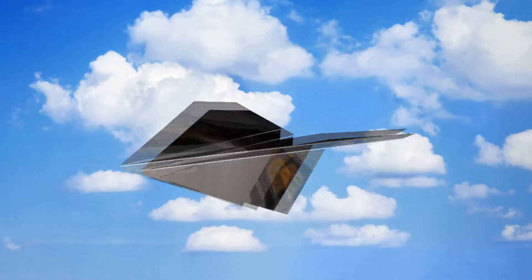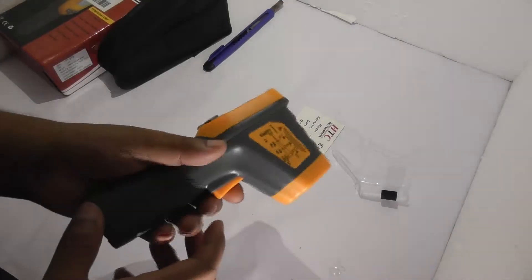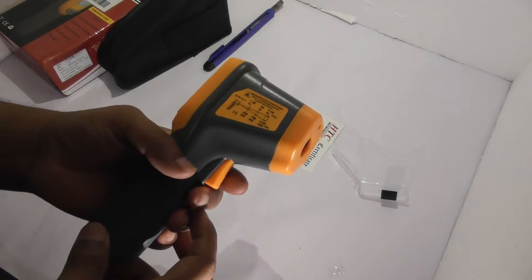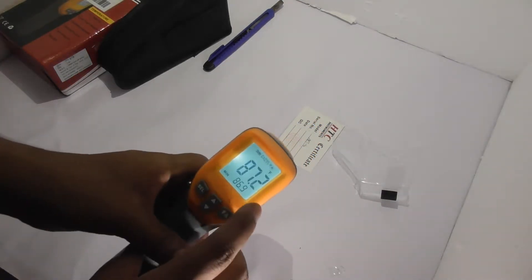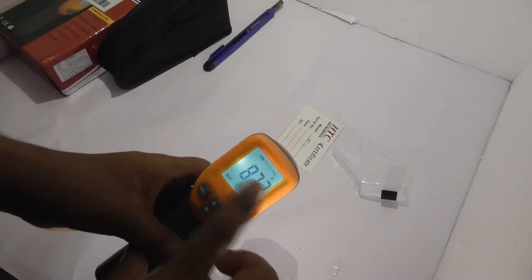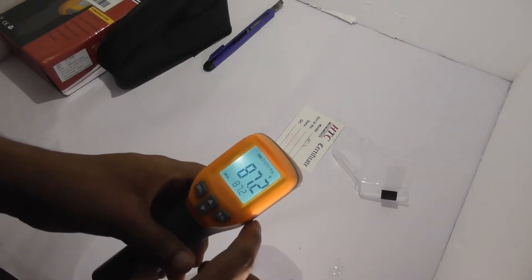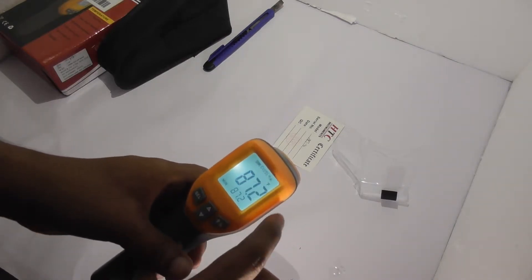Now let's turn on this infrared thermometer. To turn it on, you just press or hold this trigger. As you can see, this display is glowing. Now let's take a close look at this display.